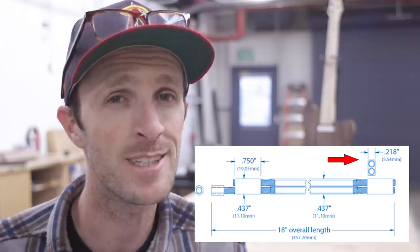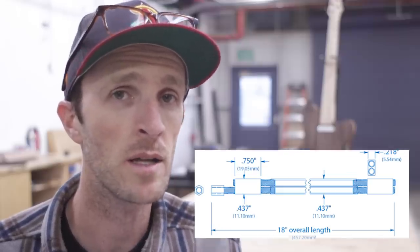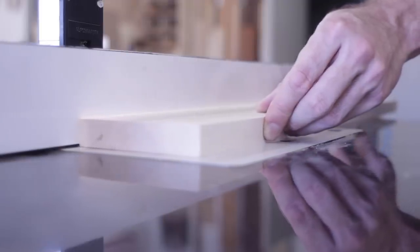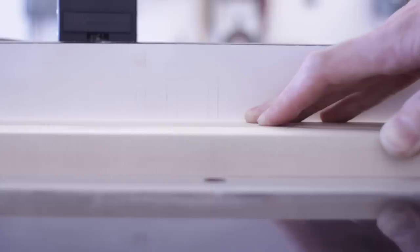The truss rod needs to be a perfect fit when installed into the neck to work properly. The one I was using was 7/32nds of an inch thick. But luckily I had a router bit that was exactly that size, so I used my router table to get the majority of the cavity cut out.